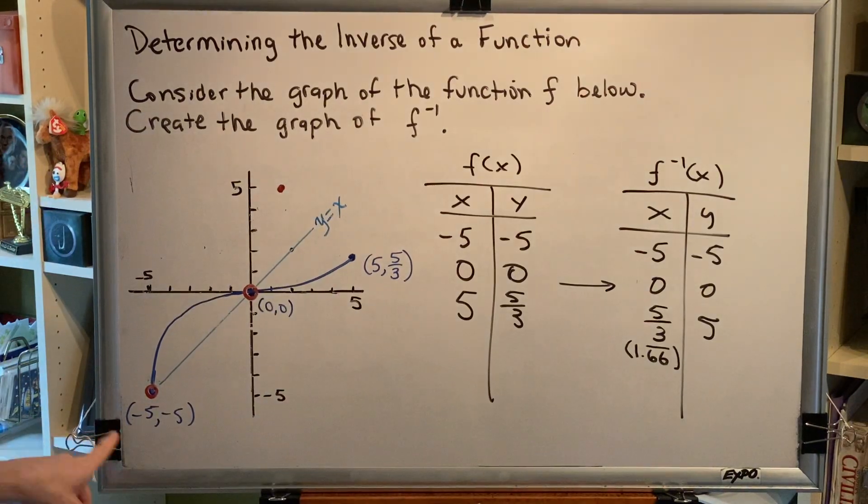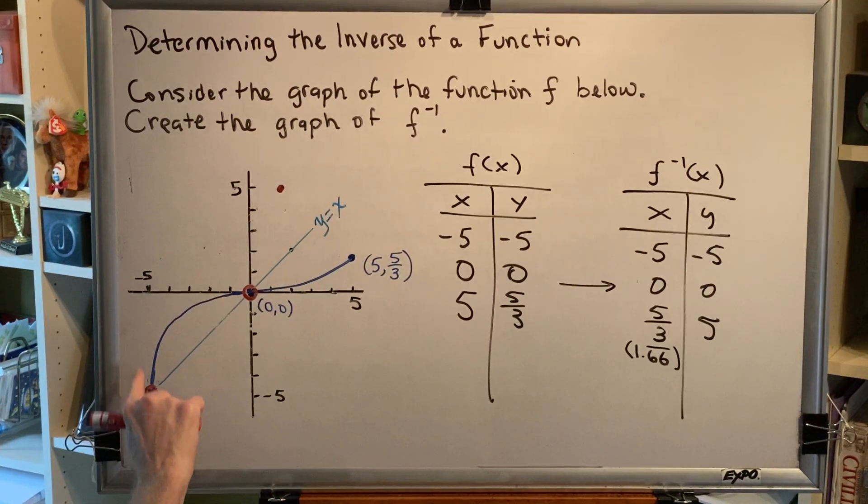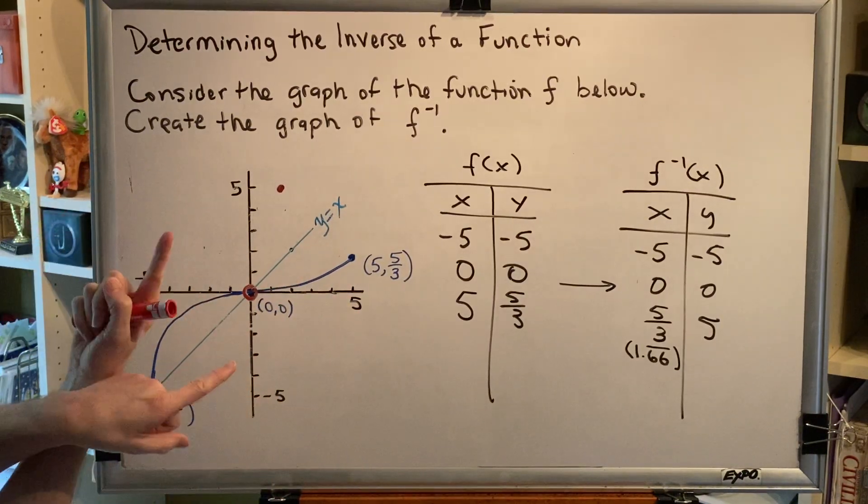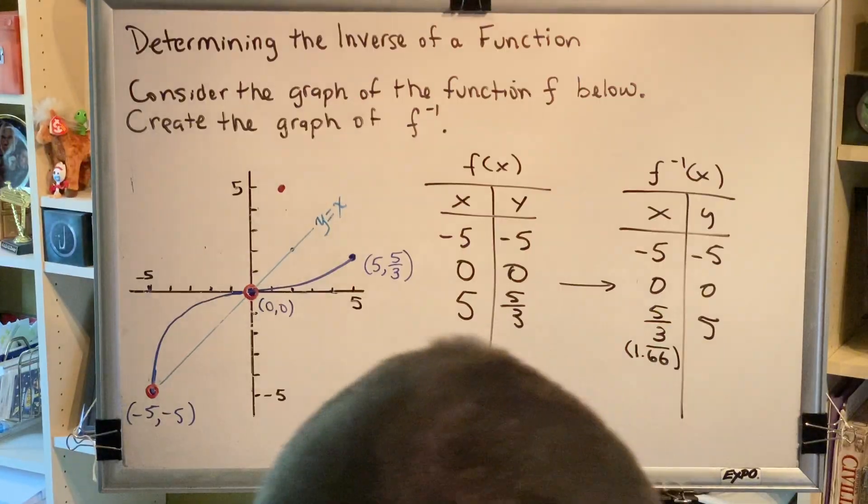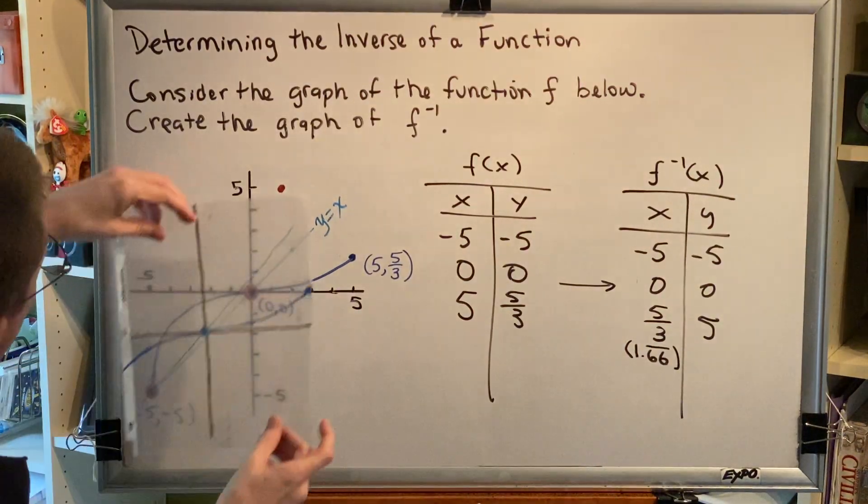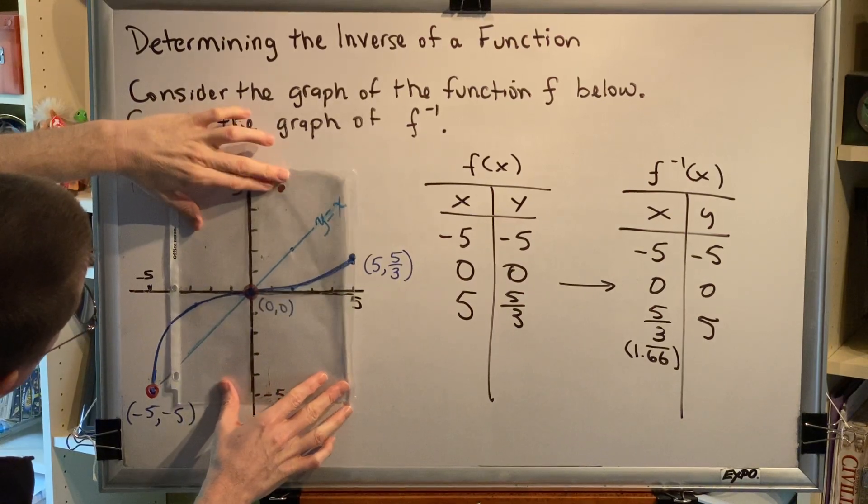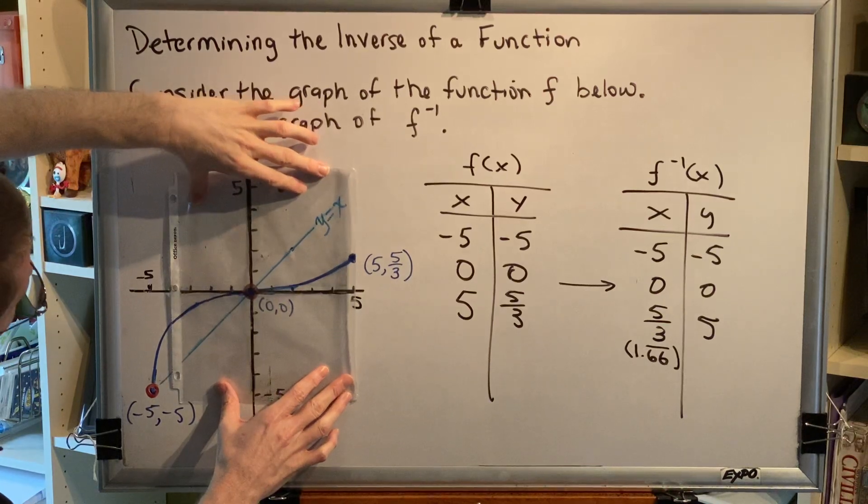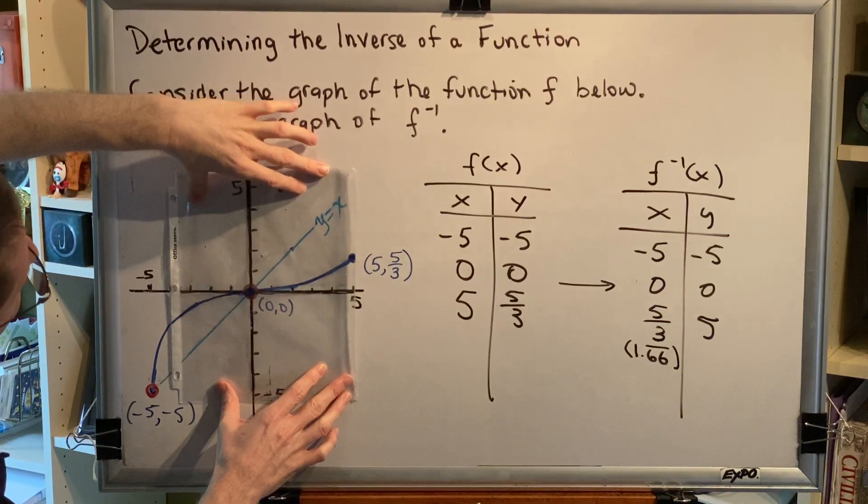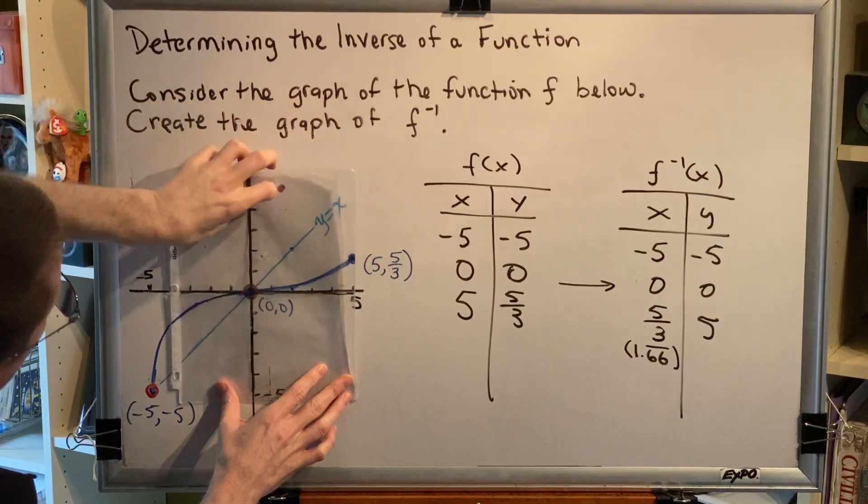Now we just have to figure out how to connect these three dots to make the shape you would get if you spun the blue curve around the light blue line. I have a transparency here to help us. I have traced the dark blue curve and the light blue line onto my transparency. We're going to remove the transparency, spin it around the line y equals x, and that should give us an idea of what the f inverse graph should look like.